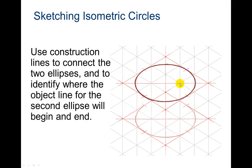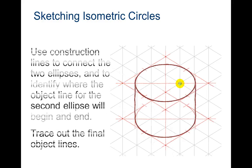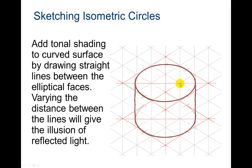Use construction lines to connect the two ellipses and to identify where the object line for the second ellipse will begin and end. And then trace out the final object. Add tonal shading to curved surface by drawing the straight lines between the elliptical spaces. Vary the distance between the lines will give the illusion of reflected light.